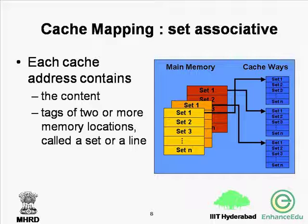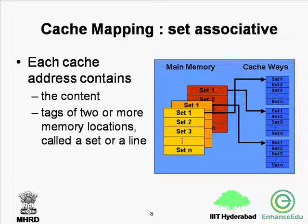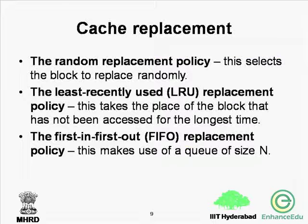The third technique is set associative mapping, which is a compromise between direct and fully associative mapping. In direct mapping, the index maps each main memory address to a cache address. In set associative mapping, each cache address contains the content and tag of two or more memory locations, called a set or line. To determine if the desired main memory address is in cache, we go to the cache address indicated by the index and simultaneously compare with the tags in that location. When the desired tag is found, that particular memory is selected and mapped.